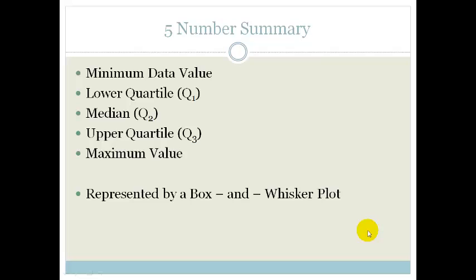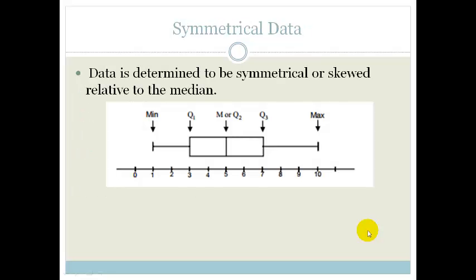And this is represented by a box and whisker plot, which looks like this. So, we remember, we spoke about the fact that we had a minimum, we have the Q1, which is your lower quartile, your median, your upper quartile, and your maximum. And this here is your interquartile range, IQR.